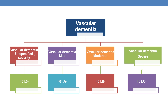Coming to vascular dementia, indicated by subcategory F01. The codes are based on severity and categorized into unspecified, mild, moderate, and severe. Vascular dementia unspecified is given by subcategory F01.5. Vascular dementia mild is given by F01.A, moderate by F01.B, and severe by F01.C.